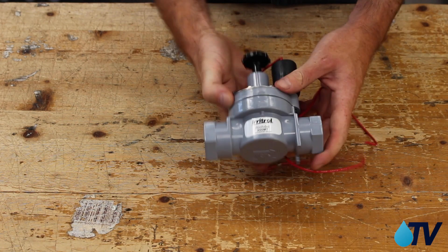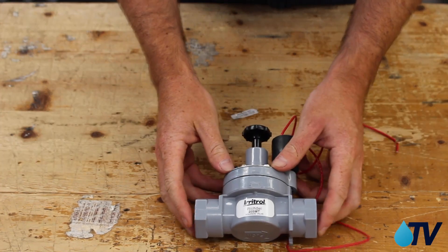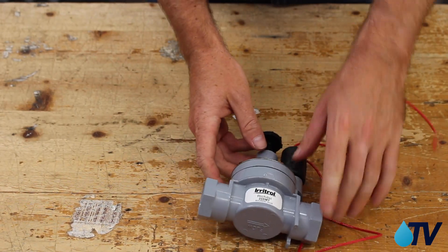Okay, so here we have our solenoid valve, our Irritrol 205MT. Now let's take it apart.